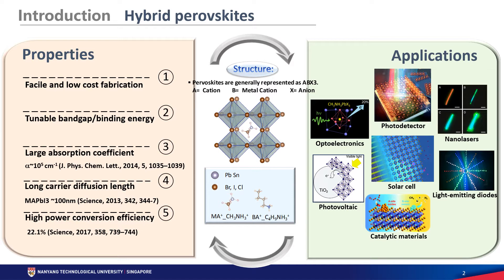Hybrid perovskites have attracted a lot of attention in recent years because of some very special properties. For example, they can be easily produced at very low cost and in large quantities. With many materials and elements available, it is easy to tune the energy band gap and the binding energy. In 2D and 1D materials, the binding energy is really large. And perovskites have a very large absorption coefficient, which makes them ideal materials for light absorption applications.